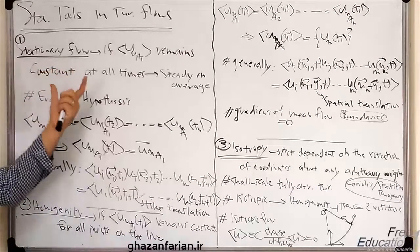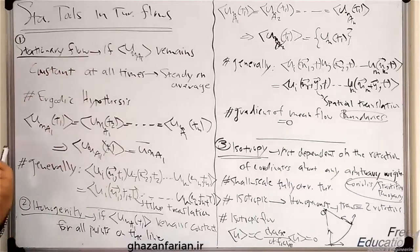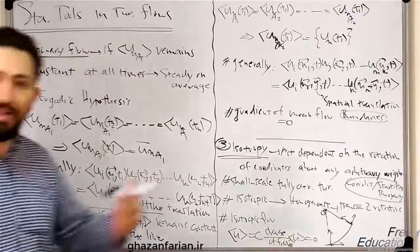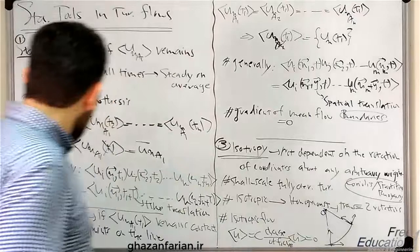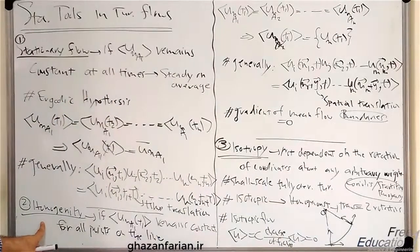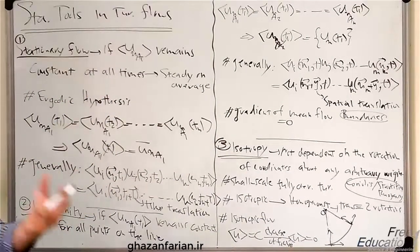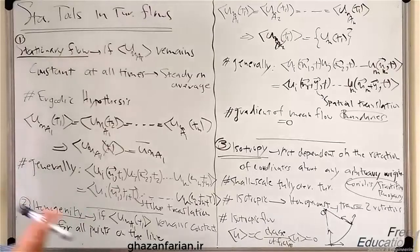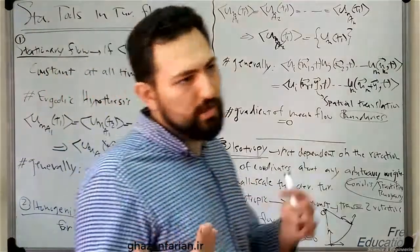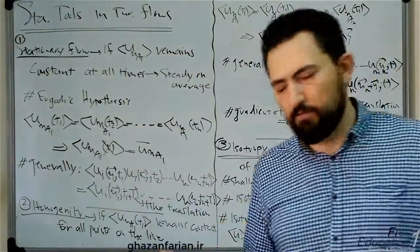The stationary flow talks about the time averaging and the ensemble average, and the homogeneity is about the relation between the local averaging or the line averaging and the ensemble average.